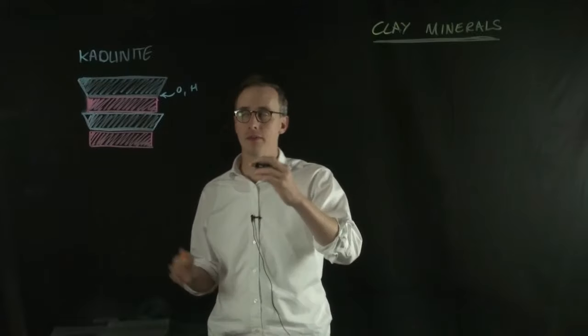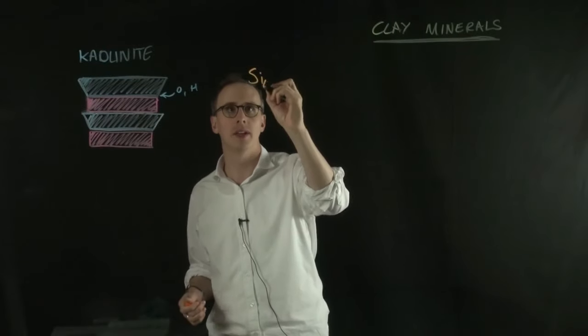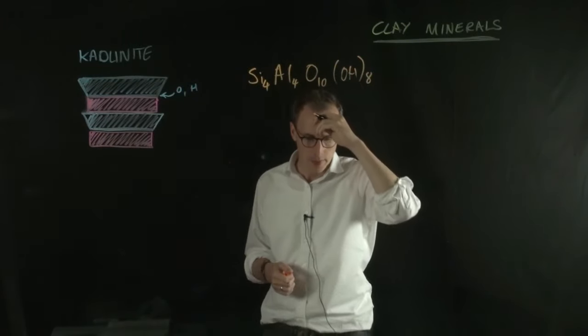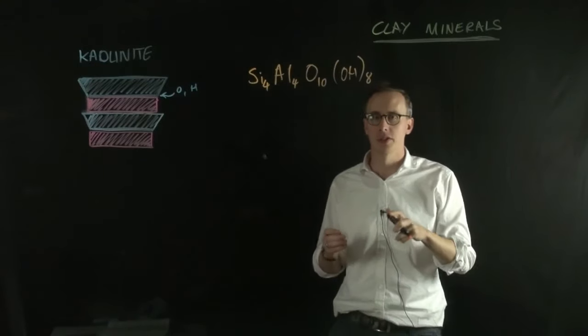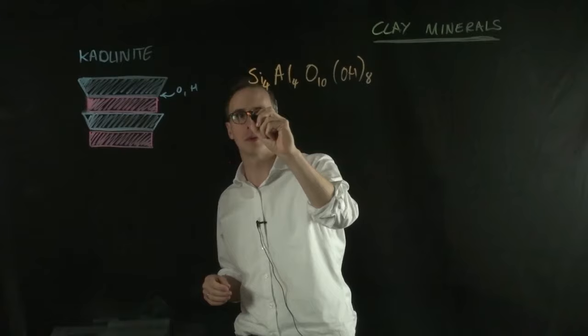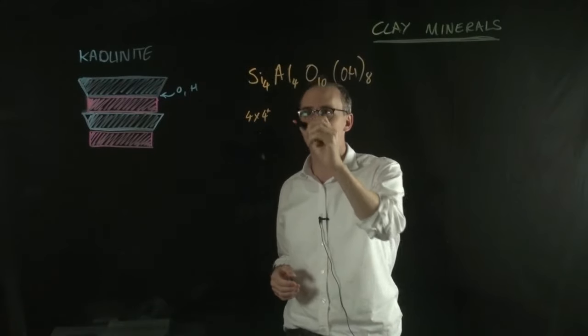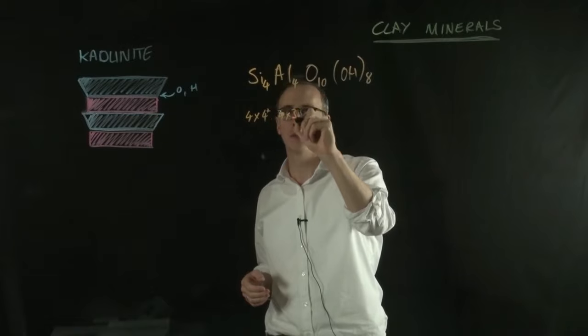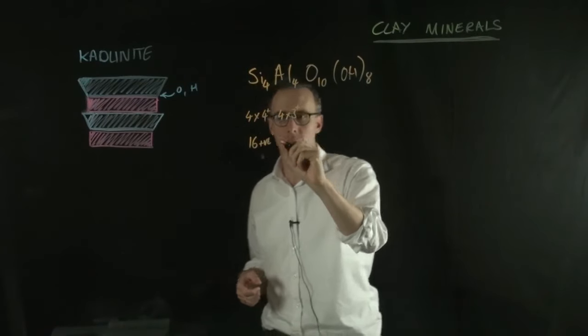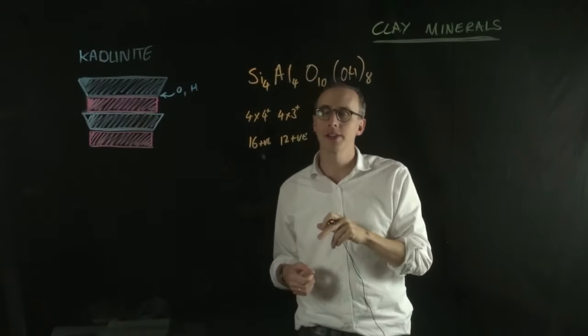Let's say we have kaolinite here. And we have maybe a typical chemical formula for kaolinite would be Si4, Al4, O10, OH8. Now, let's count up all of the positive and negative charges within that. Silicon atoms by themselves have a four-plus charge. So, we have four times four-plus charge. Aluminum atoms have a three-plus charge. So, we have four times three-plus. And those two together give us, well, here it's 16 positive charges and here's 12 positive charges.